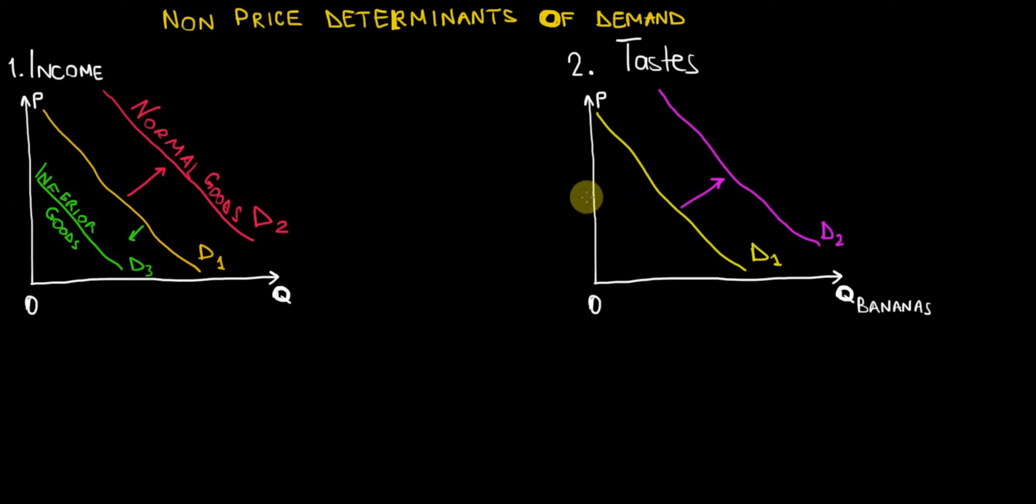That means that at a given price level P for bananas on the market, we will go from an original quantity Q1 to a shifted demand curve that gives us a quantity Q2 of bananas on the market. So the quantity demanded will increase at the same price level, meaning that more people will demand more bananas on this marketplace just because their taste for it has changed in a positive direction.